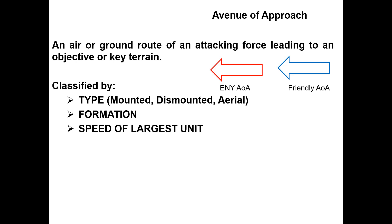We can classify avenues of approach based on type: is it a mounted avenue of approach, a dismounted avenue of approach, or an air avenue? We talk about the formations that can get through them — can we put a battalion formation through, or do we have to go through with only a squad? We can also talk about the speed of the largest unit that could move on that avenue of approach, whether it's a nice paved road or hilly terrain or a swamp.